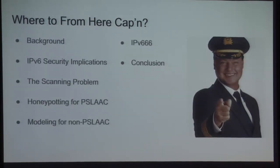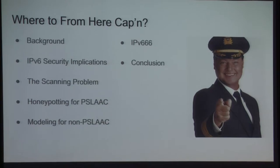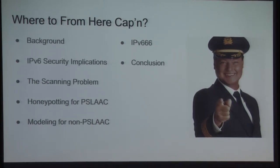We're going to start with some background on IPv6 and our motivations for doing this work. We'll talk about the security implications, the difficulties of scanning this address space, two different methods we used for generating addresses — both honeypotting and modeling — the tool set IPv666 which we've open-sourced, and conclude with a few results. Chris and I are not network engineers; we've been learning about IPv6 through the course of this project. We almost certainly have something wrong, so please let us know — we appreciate your feedback.